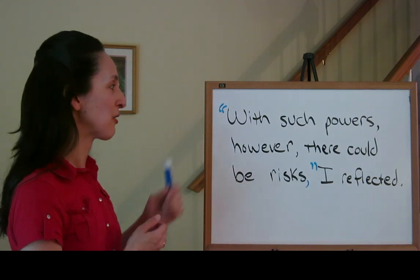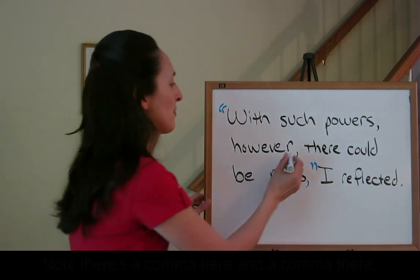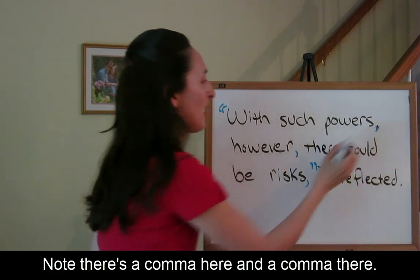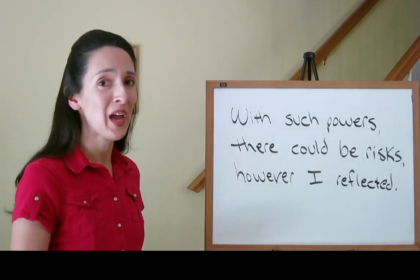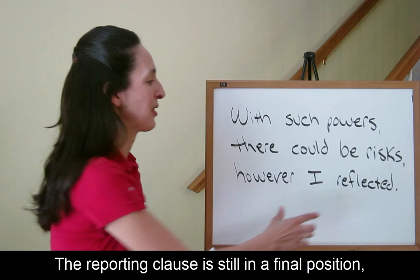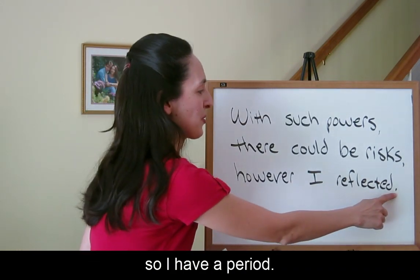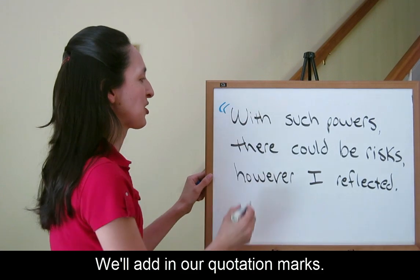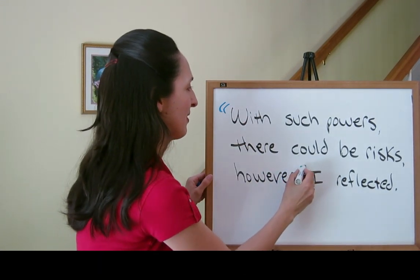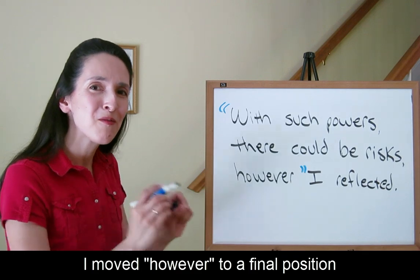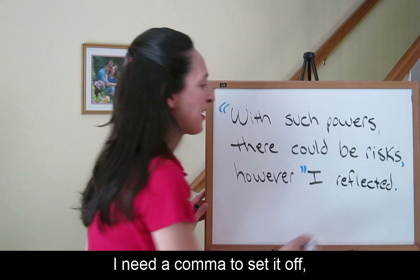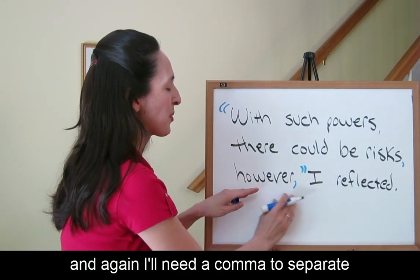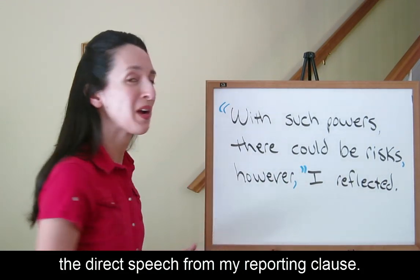'With such powers, there could be risks, however,' I reflected. The reporting clause is still in a final position, so we have a period. We add our quotation marks. I moved 'however' to a final position within the direct speech. I need a comma to set it off, and again a comma to separate the direct speech from my reporting clause.